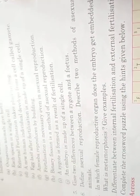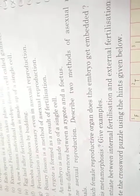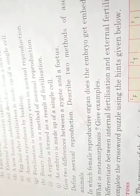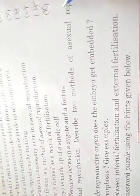Binary fission is a method of asexual reproduction - bilkul sahi hai, aapka right. A zygote is formed as a result of fertilization - bilkul sahi hai. An embryo is made up of a single cell - embryo jo single cell ka hota hai nahin, bilkul galat.